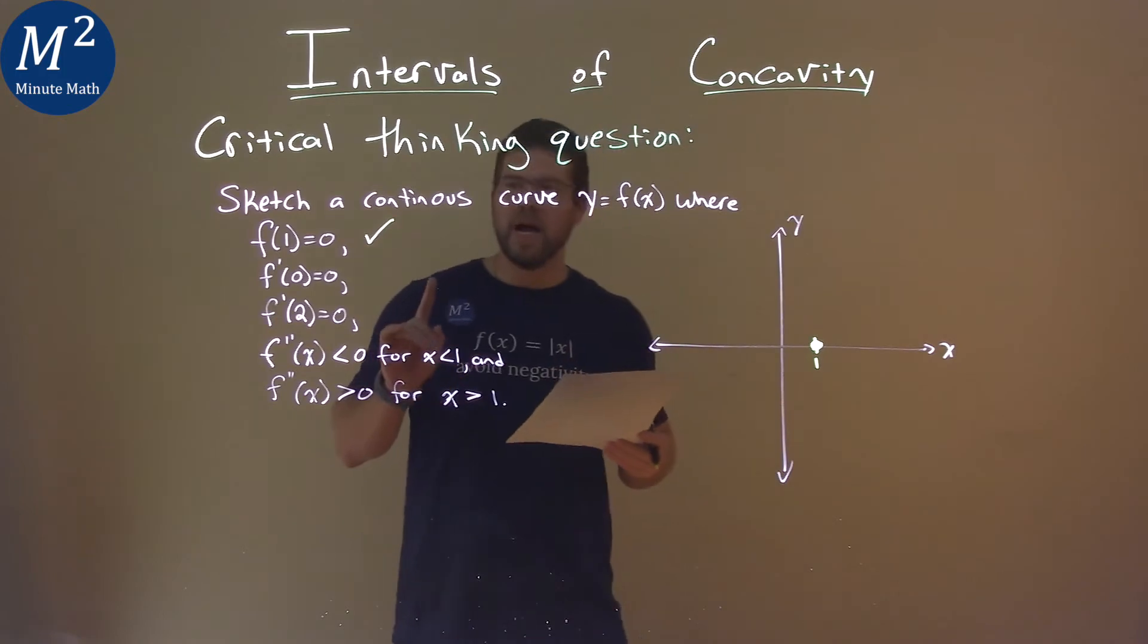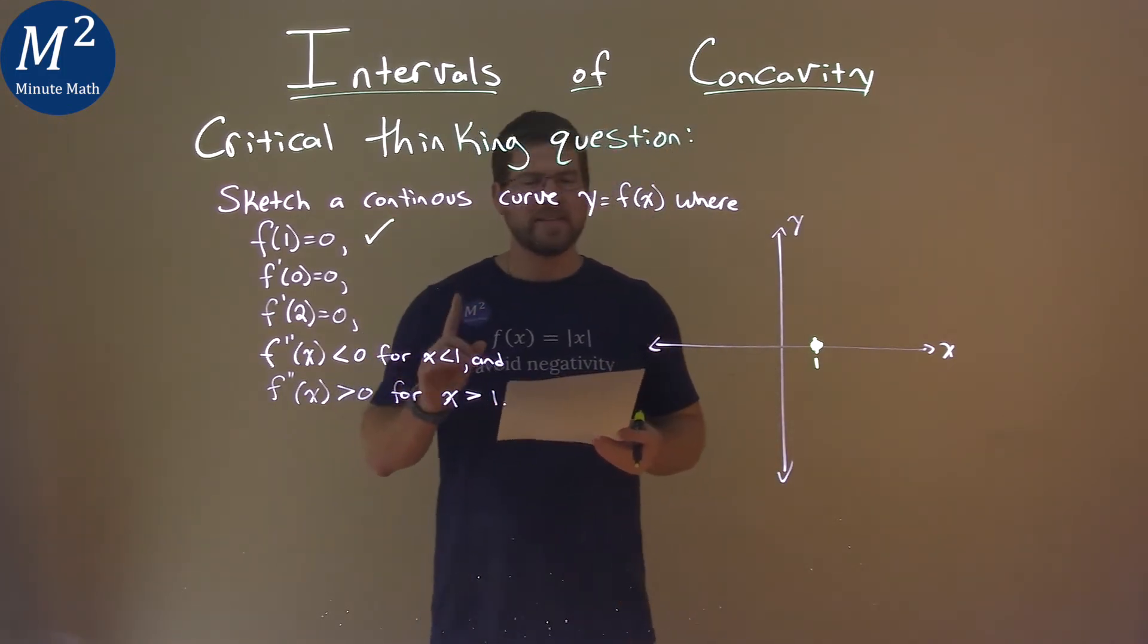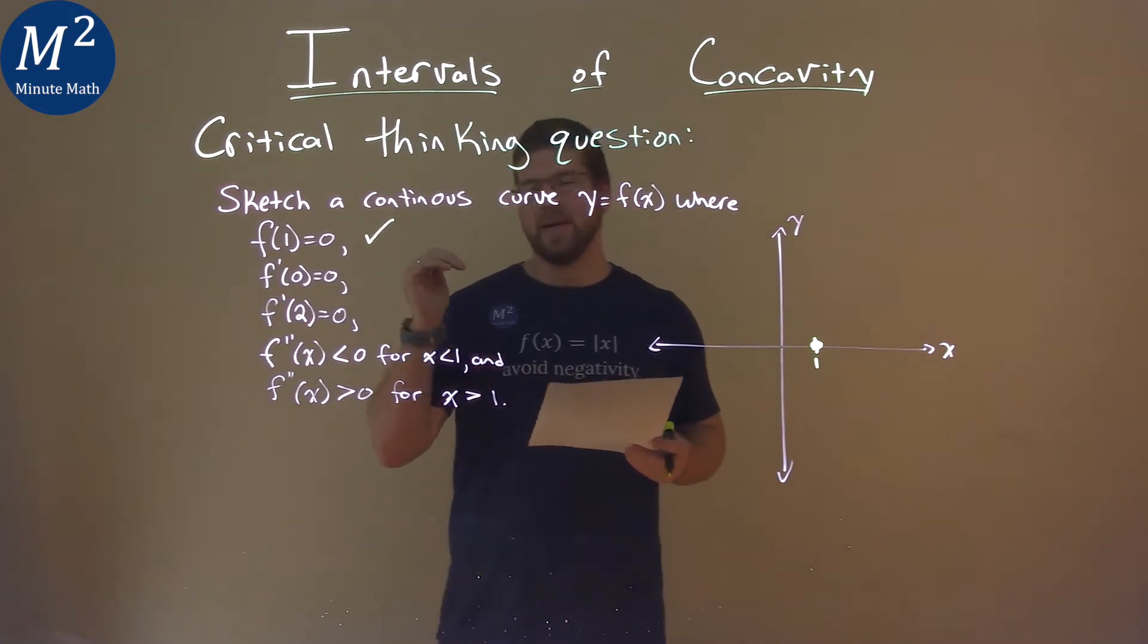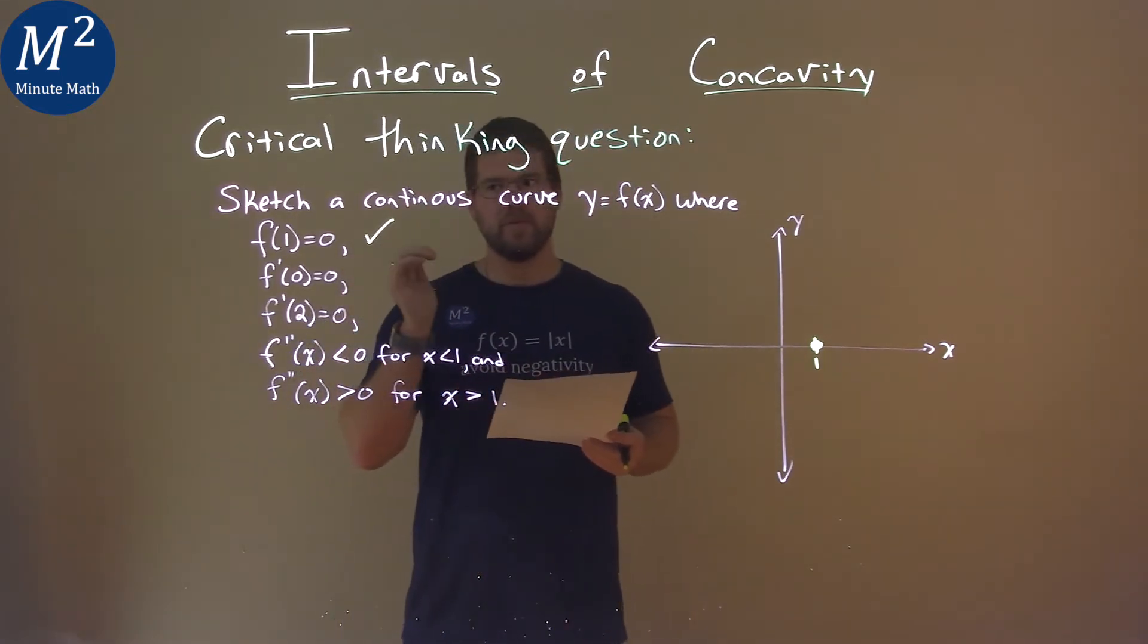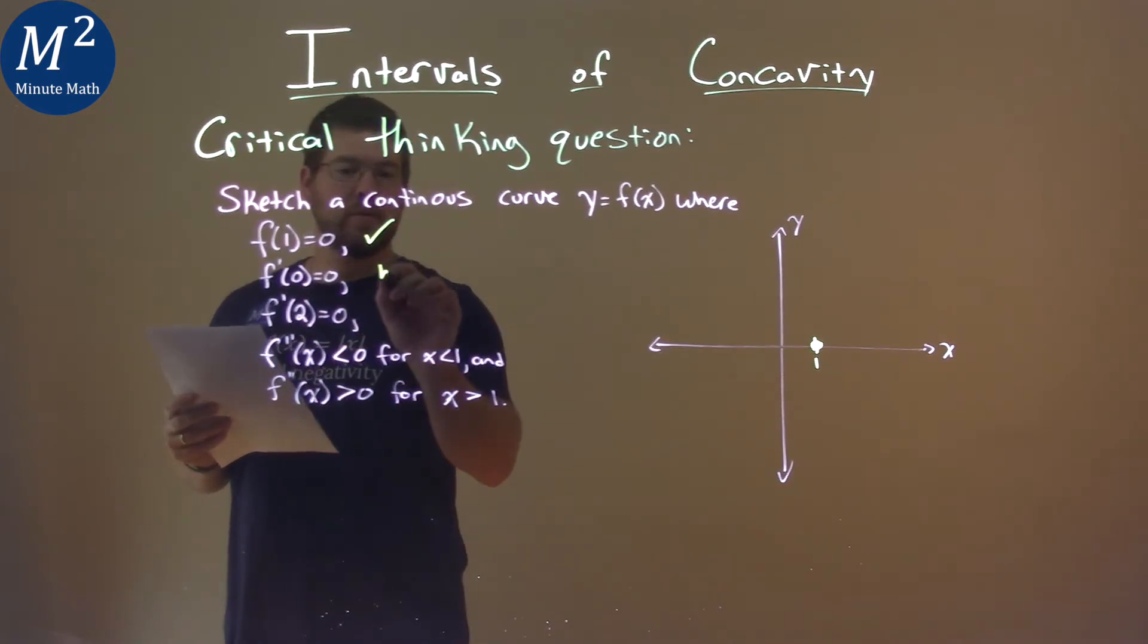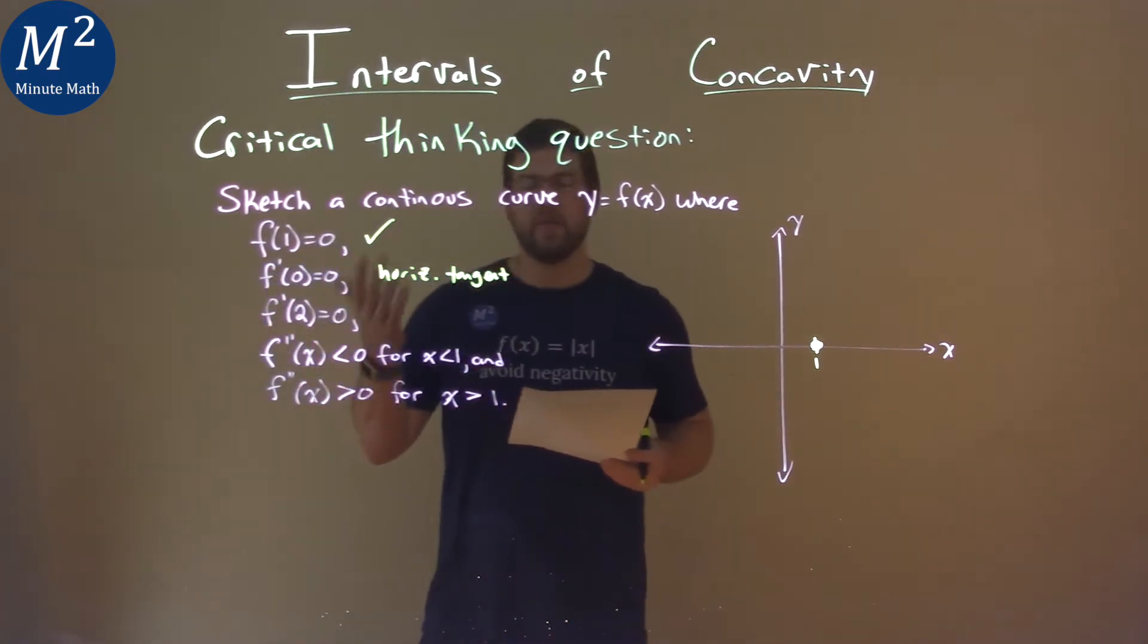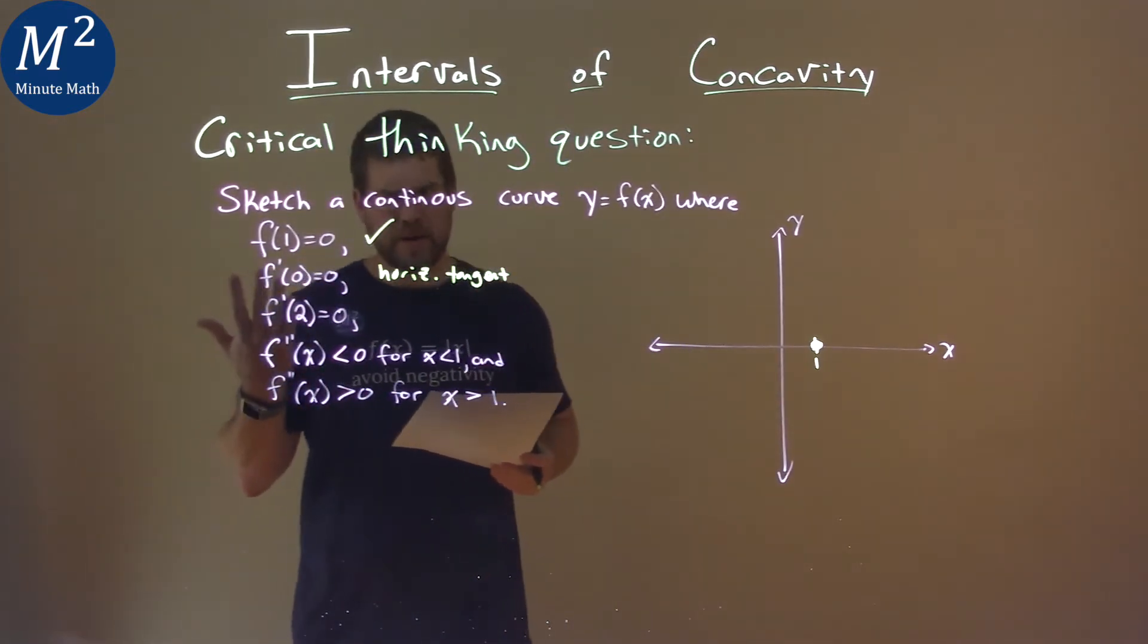Now they tell us that f prime of 0 equals 0. What that's telling me is that we have a horizontal tangent right there. Horizontal tangent right there at f of 0, f prime of 0 equals 0. So we have a horizontal tangent going on there. That's where the first derivative crosses 0, right, the x-axis.